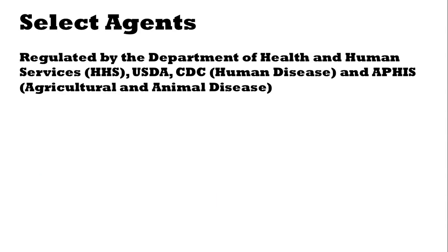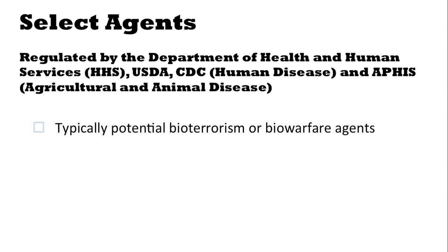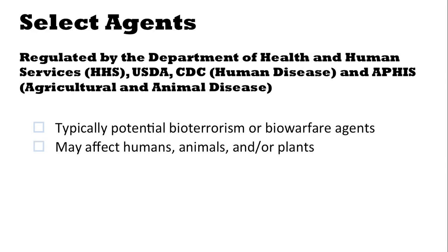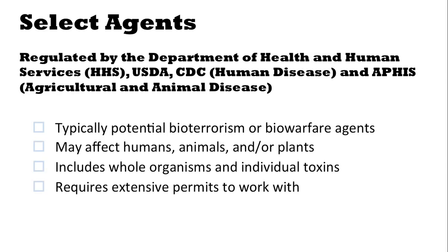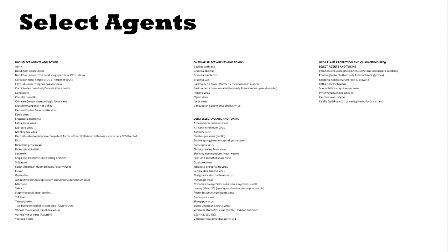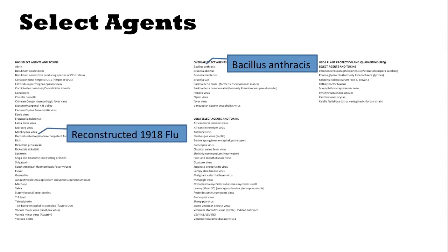Earlier, we mentioned select agents, which are regulated by the group shown here. These are typically potential bioterrorism or biowarfare agents. They may affect humans, animals, and/or plants. They include whole organisms and individual toxins, and require extensive permits to work with. Violations of the rules for select agents have severe penalties. Here is a partial list of select agents — some of these may be familiar to you. For example, the bacteria which causes anthrax. While this is naturally occurring, engineered things can appear as well, such as the reconstructed 1918 flu.